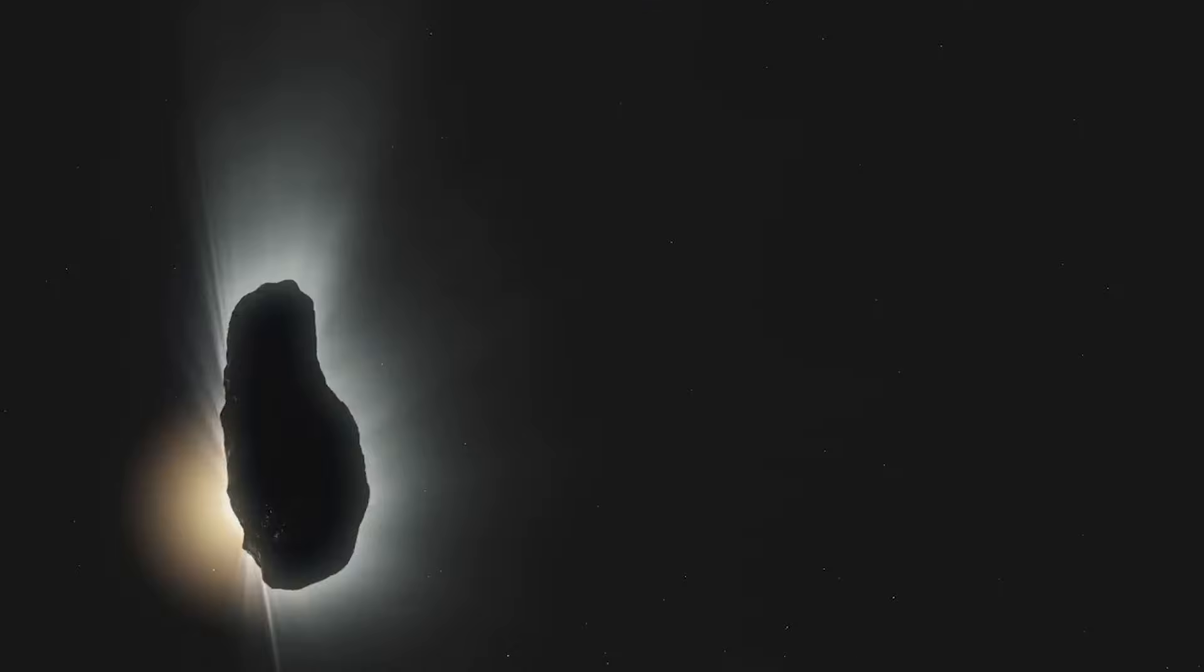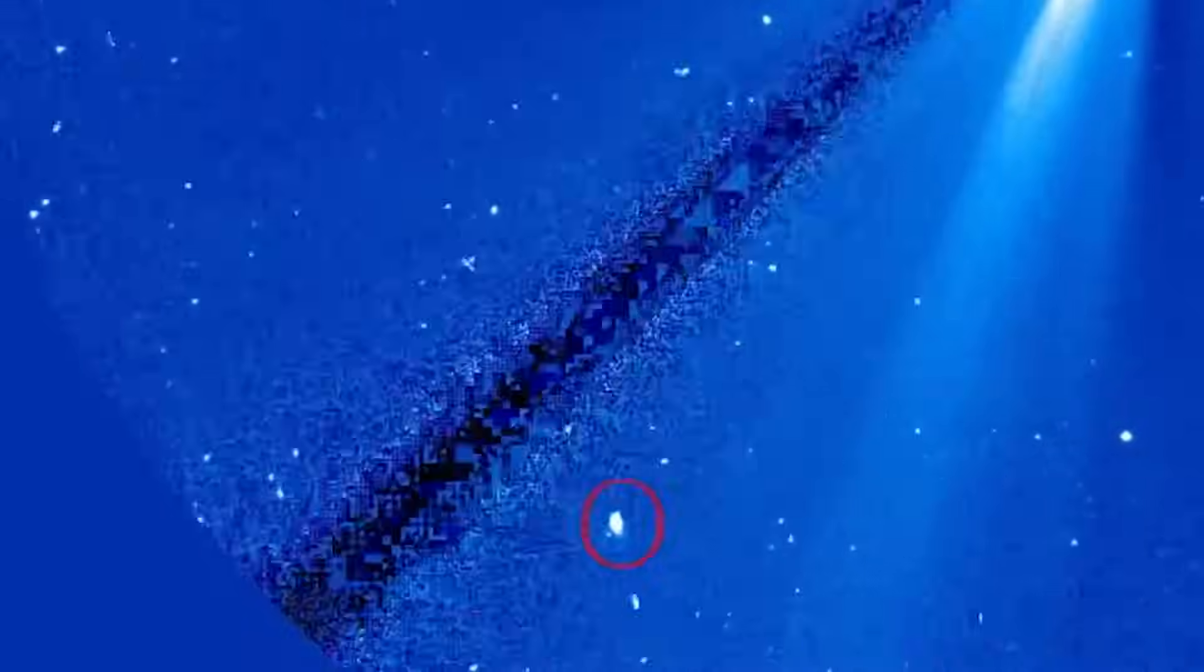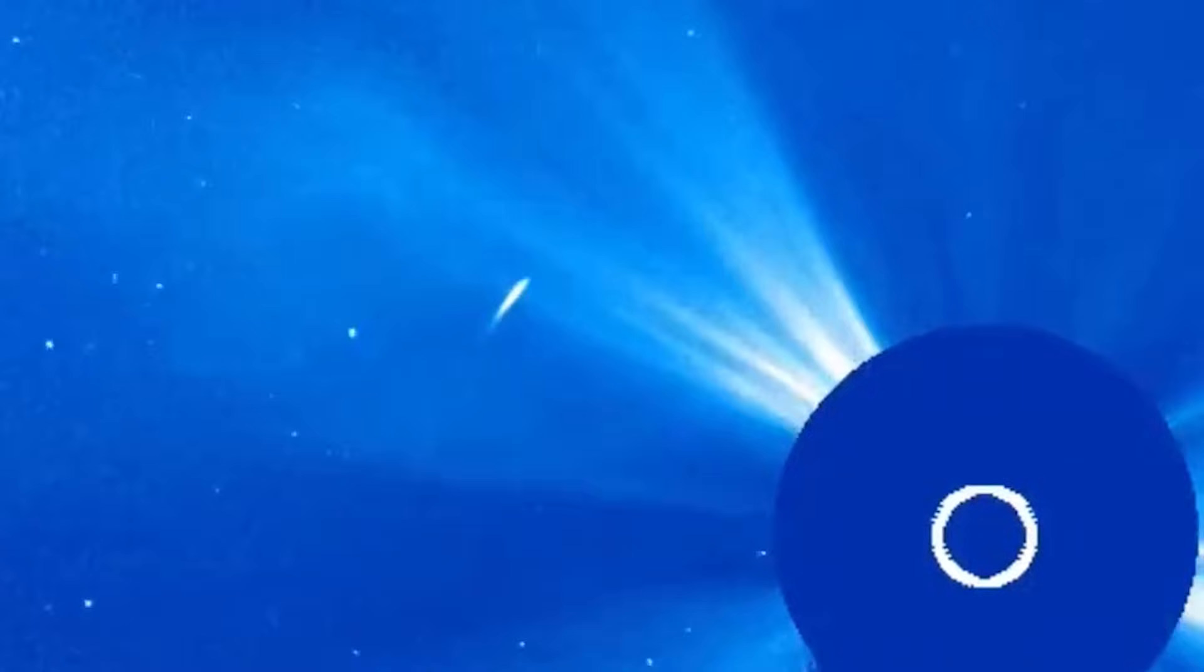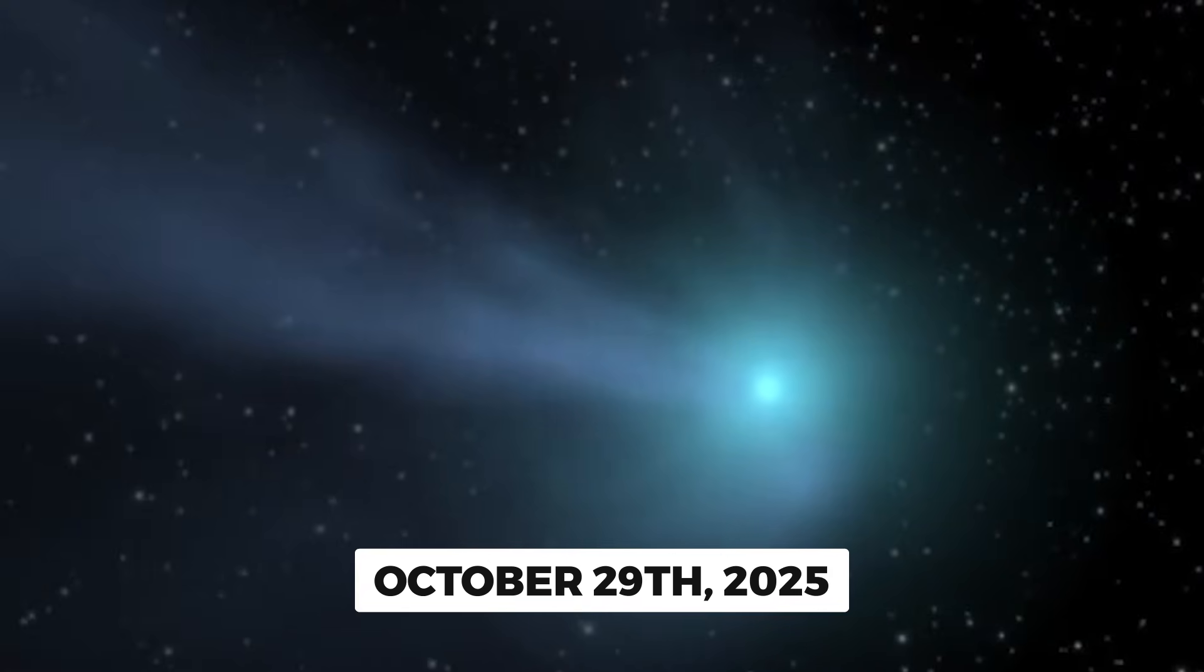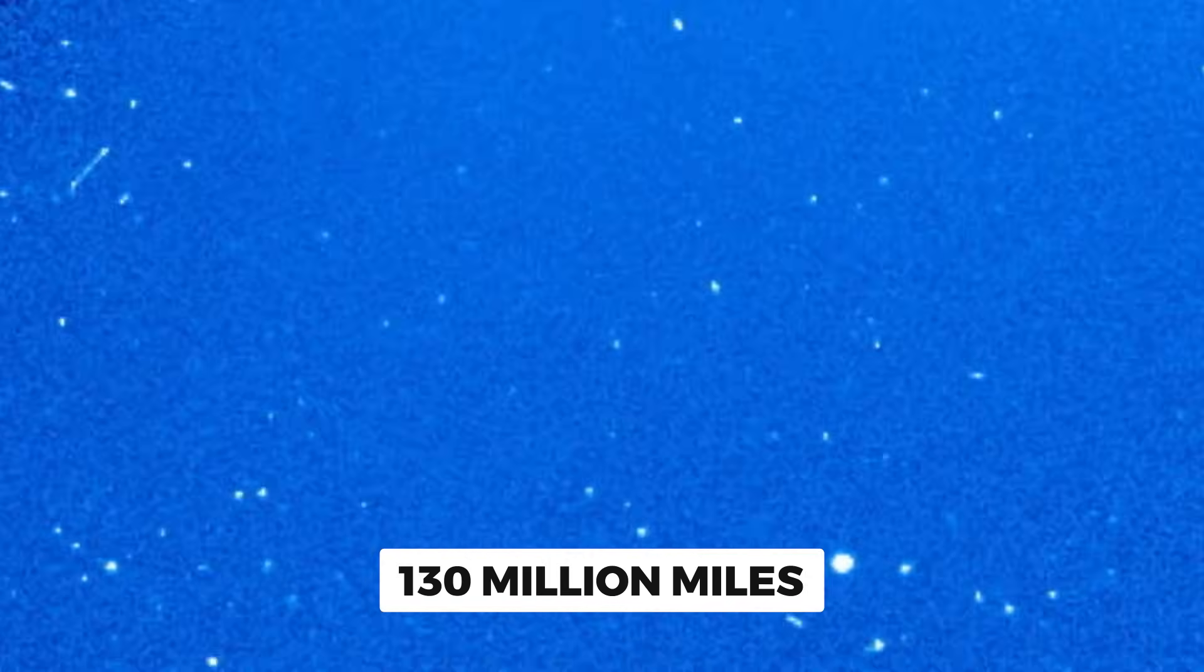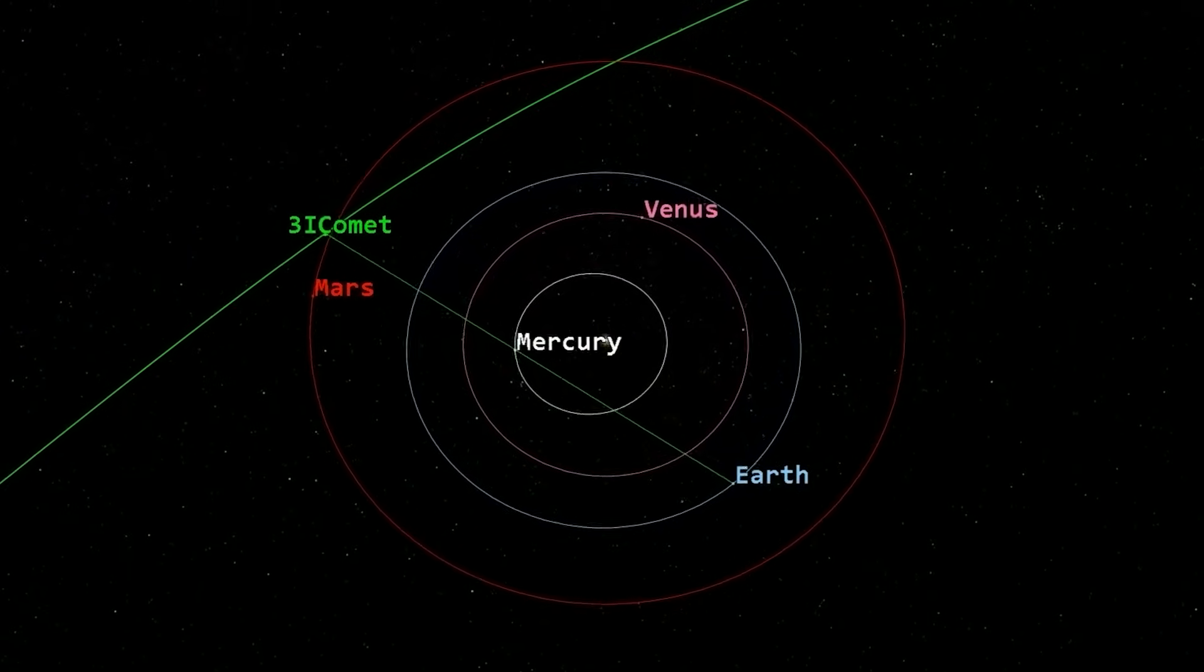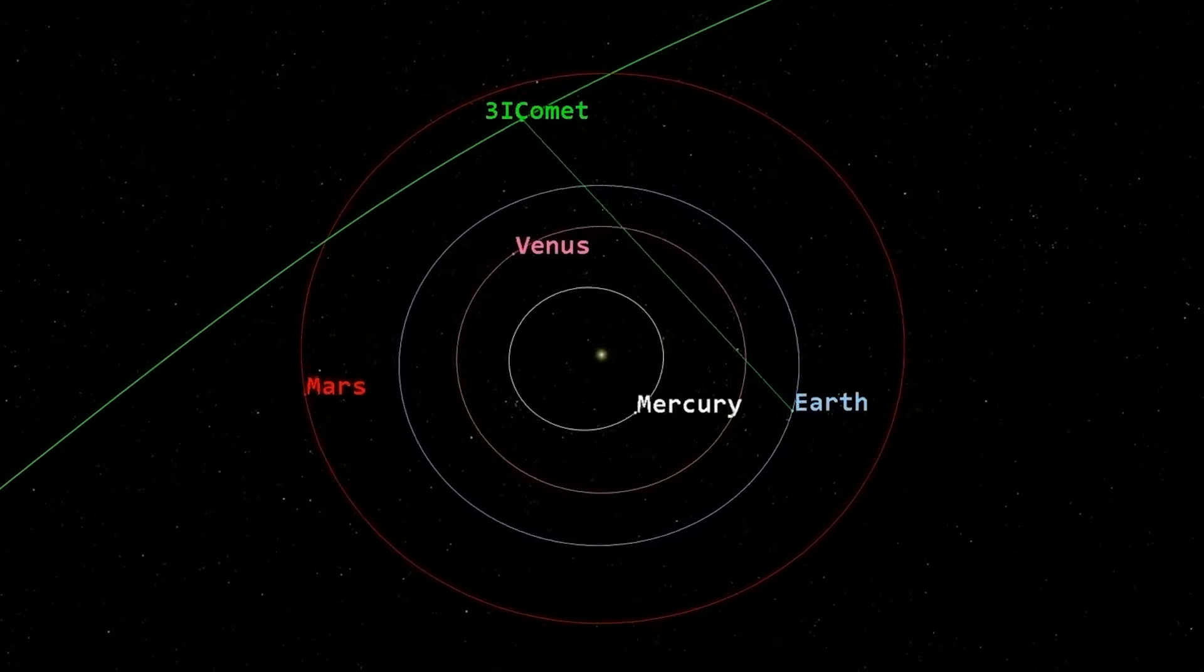But there's something else happening here that makes this even more fascinating. And it has to do with what 3I Atlas went through when it reached perihelion, its closest approach to the sun, on October 29th, 2025. At perihelion, 3I Atlas was about 130 million miles from the sun. That's actually inside the orbit of Mars. And at that distance, something dramatic happened.